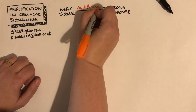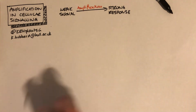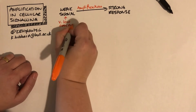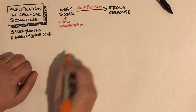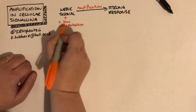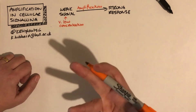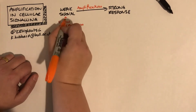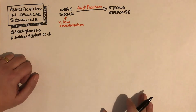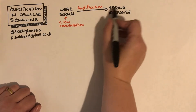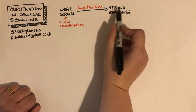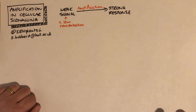Amplification is important in biological systems because the original signal might have a very low concentration — there might be a very small number of signaling molecules floating around in the bloodstream. You might have to detect only one molecule, but if that molecule is biologically important, you still need a strong and robust biological response. For example, you may want to activate all ten thousand copies of a particular enzyme in the cell, even starting from a very weak signal.